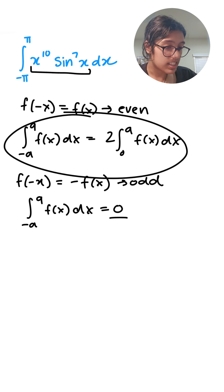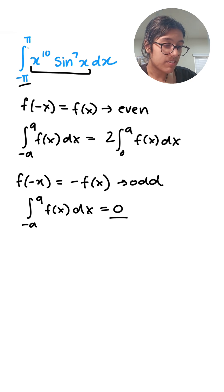The only reason we can apply this is because our bounds are negative a to a. In other words, negative pi to pi. You can't apply this if you have bounds such as 3 and 2. It always has to be the opposite signs, which is denoted by that negative a and a over here.